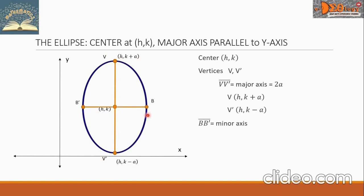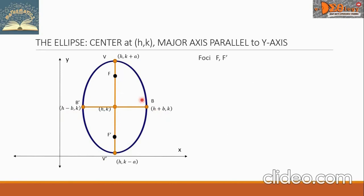Next is the minor axis. The endpoints are the points B and B'. We set the length of the minor axis to be 2b. We can write the coordinates of the endpoints of the minor axis as (h+b, k) and (h−b, k) respectively. Next are the foci, denoted by F and F'. The distance between the foci is assigned as 2c. So the coordinates of the foci are (h, k+c) and (h, k−c) respectively.